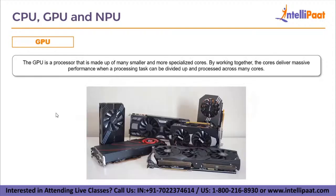Now let us take a look at what a GPU is. The GPU is a processor similar to a CPU. It is basically a silicon chip that is made up of many smaller and more specialized cores. By working together, the cores deliver massive performance when a processing task can be divided up and processed across many cores. Therefore GPUs are used for rendering 3D models and graphics intensive applications.